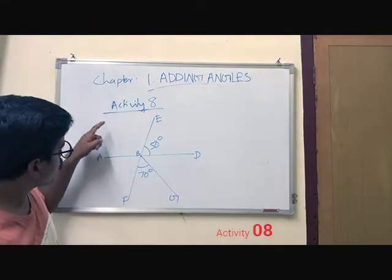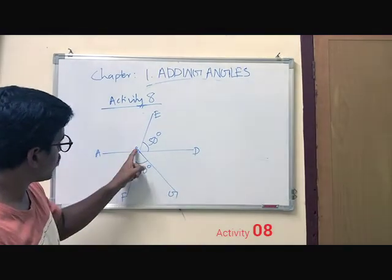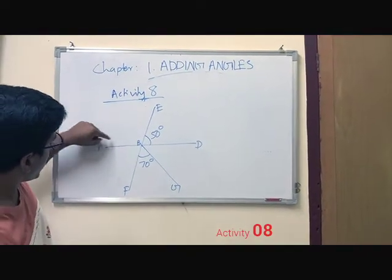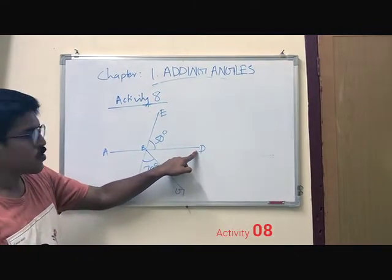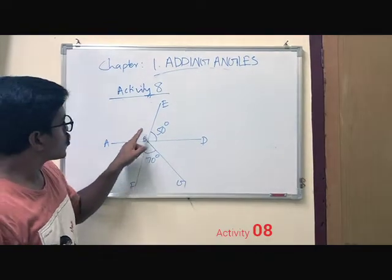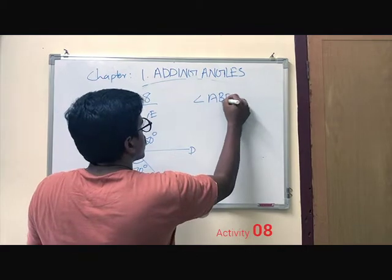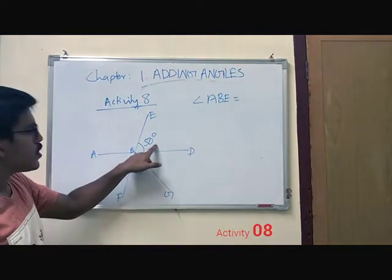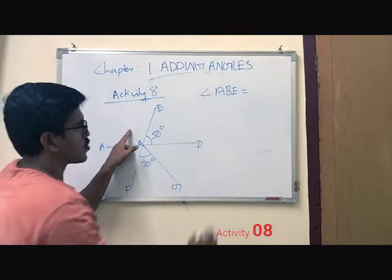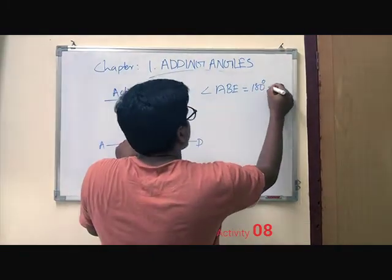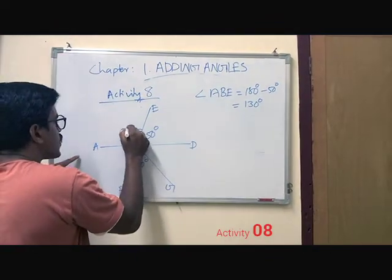Here you can see only two angles are given: angle E, B, D and angle F, B, G. Angle A, B, E and angle E, B, D are nearby angles, so they are linear pairs. Angle A, B, E equals 180 minus 50, because these two are linear pairs. So 180 degrees minus 50 degrees equals 130 degrees.